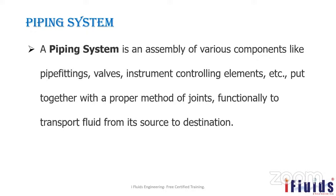First let's look at the piping system. Piping is an assembly of various components like fittings, valves, and instrument controlling elements, put together with a proper method of joint to transport a fluid from one place to another — from one tank to another tank, or from an underground pond to some elevated area.